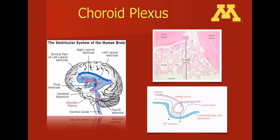On the left, you can see the ventricular system depicted in blue. The choroid plexus is depicted in red. The choroid plexus is the site of origin of cerebrospinal fluid. In the upper right-hand corner, you can see a slide demonstrating the choroid plexus, which has been stained and is visible within the ventricle. In the bottom right corner is a depiction of the choroid plexus and the production of cerebrospinal fluid.